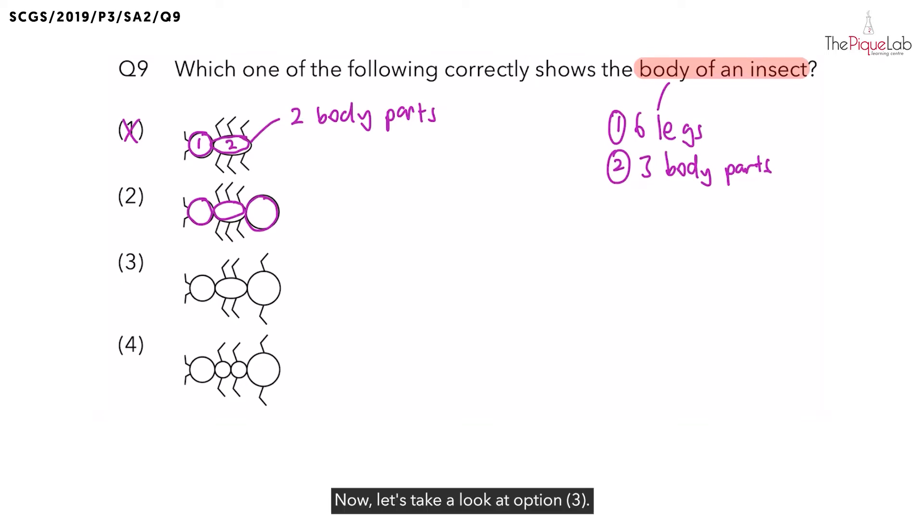Now let's take a look at option 3. For option 3, does this insect have six legs and three body parts? Yes, so option 3 is also possible.